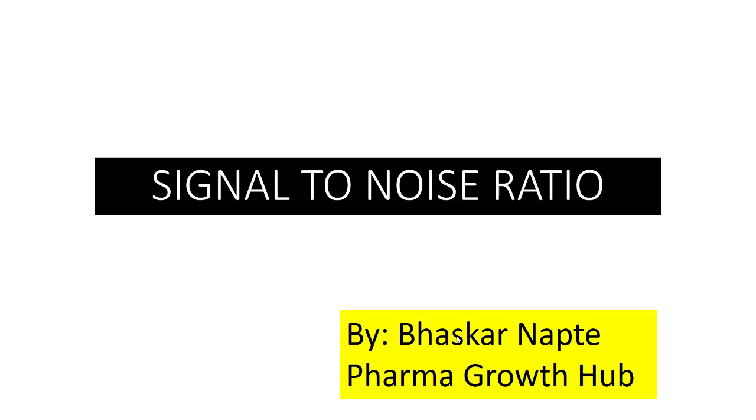Signal-to-noise ratio is required for understanding the sensitivity of analytical methods and in estimation of limit of detection and limit of quantitation. Signal-to-noise ratio is also used in understanding whether the system is suitable in case signal-to-noise ratio is a part of your system suitability.